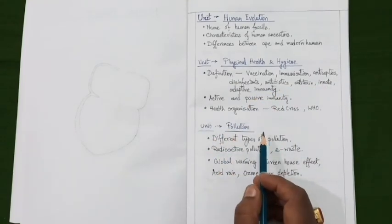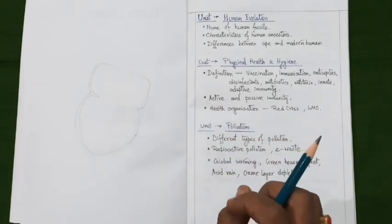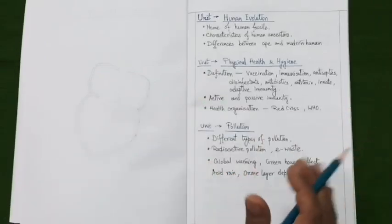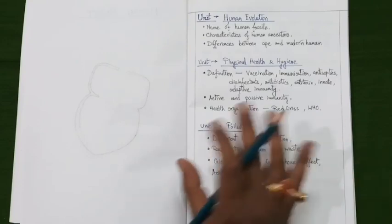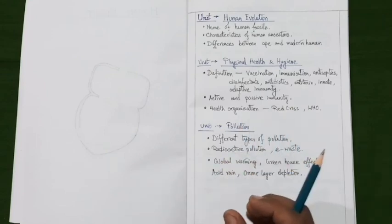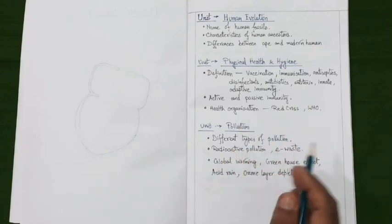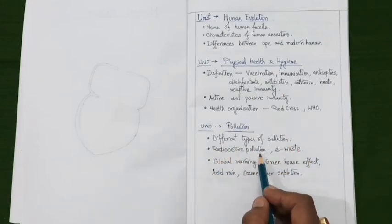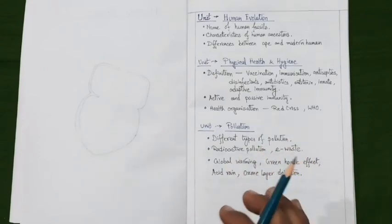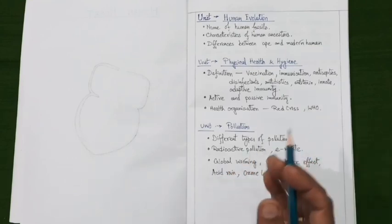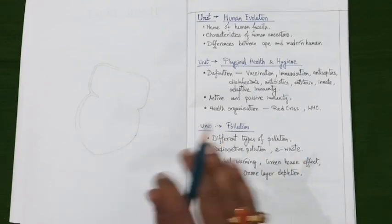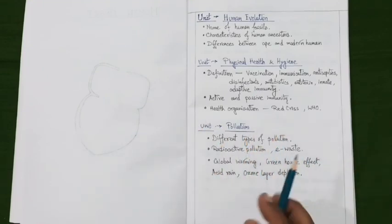Our last unit is pollution. Prepare questions on different types of pollution — sound, water, air, and others — as you may expect any one question from this topic. Very important are some modern-day pollutions like radioactive pollution and e-waste, so prepare these with great care. Finally, prepare notes on global warming, the greenhouse effect, acid rain, and ozone layer depletion, and you can certainly expect any one question from these four topics.